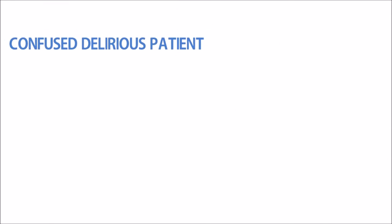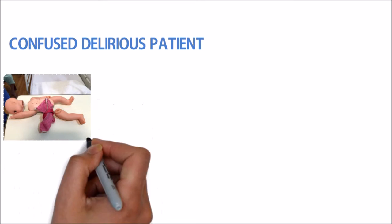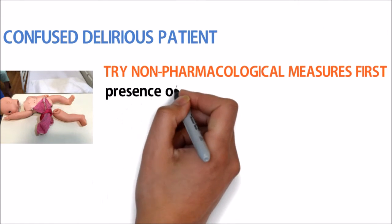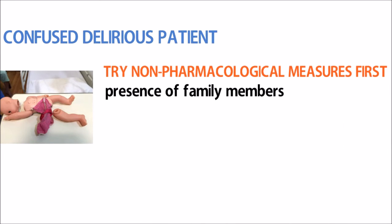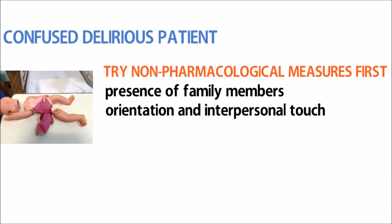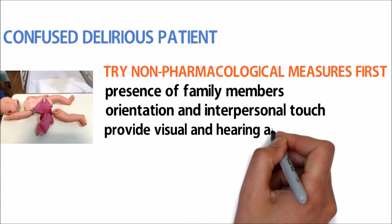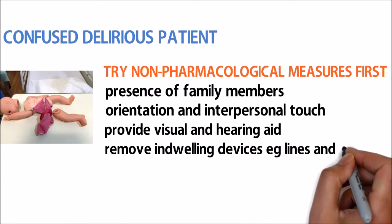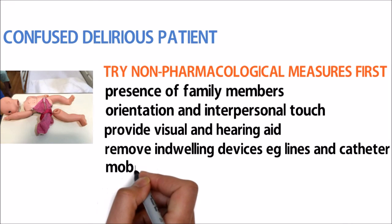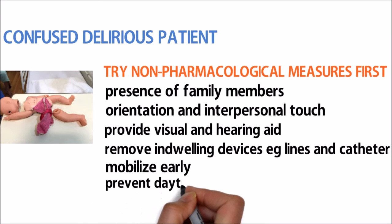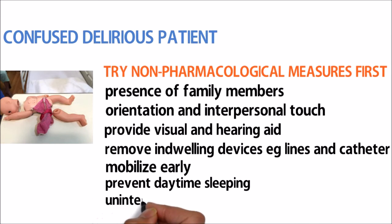If you are faced with a confused delirious patient, please avoid restraints of any form. Try non-pharmacological measures first, which includes encouraging the presence of family members and asking them to sit with their loved ones. Provide orientation and interpersonal touch, vision and hearing aids if available. Remove all indwelling devices like lines and catheters as soon as possible. Mobilize patients early if there are no contraindications. Prevent daytime sleepiness with activities and provide uninterrupted sleep at night.